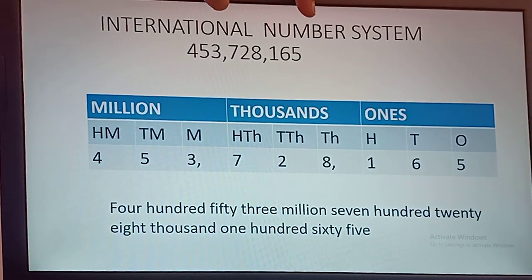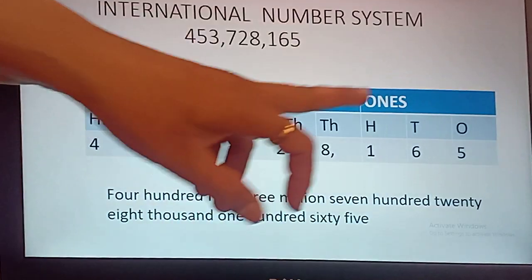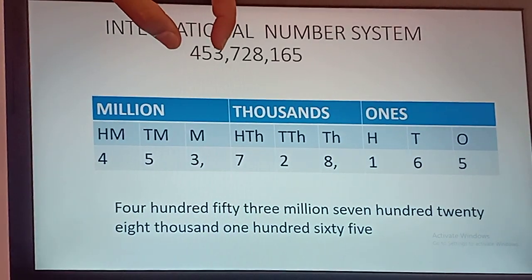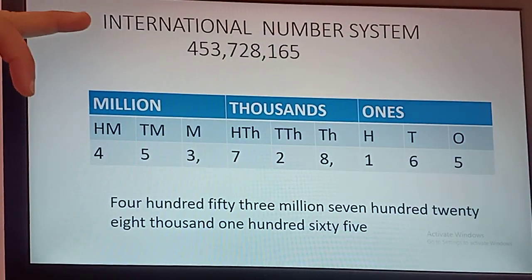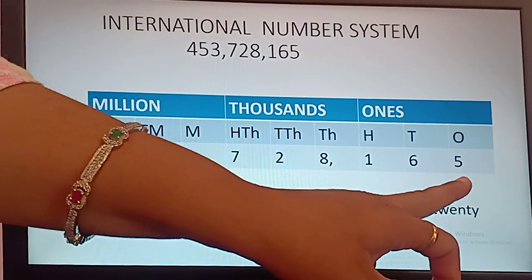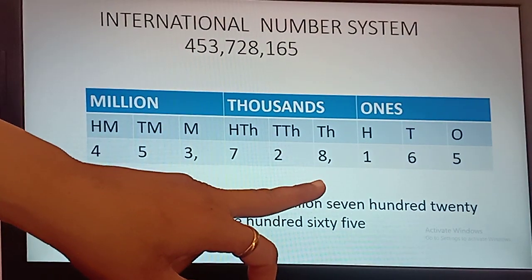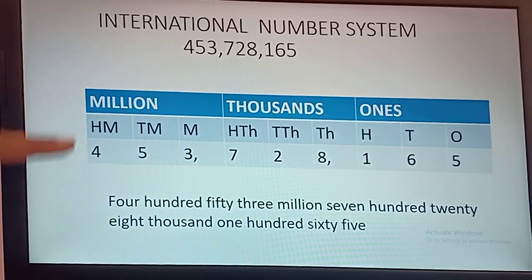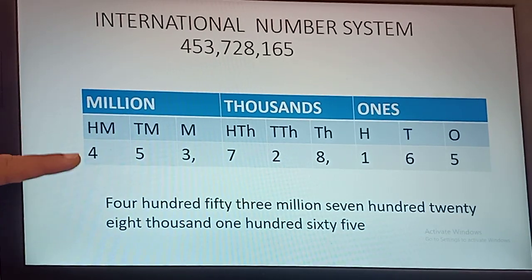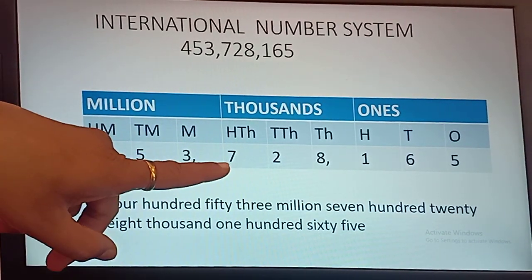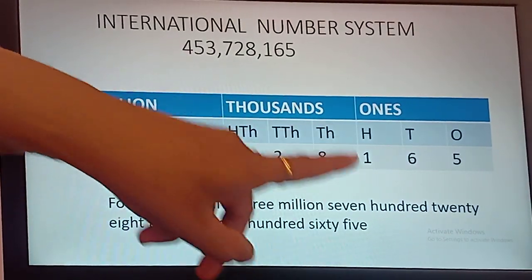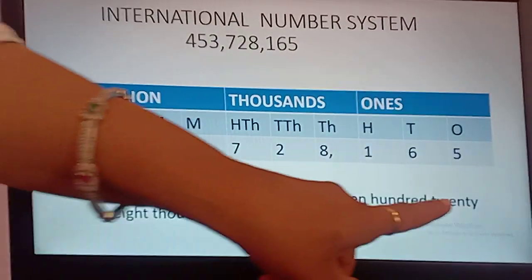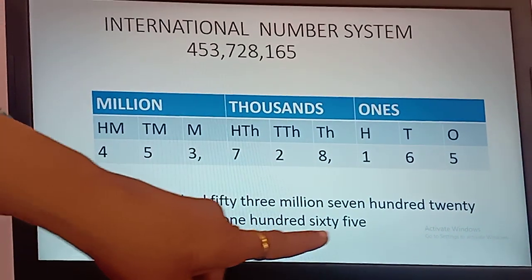In the international number system, again we split the number with commas. Ones group — we put a comma; thousands group — we put a comma; and this is the millions group. The place value in international number system will be: ones, tens, hundreds, thousands, ten thousands, hundred thousands, millions, ten millions, hundred millions. We will read and write this number as 453,728,165.